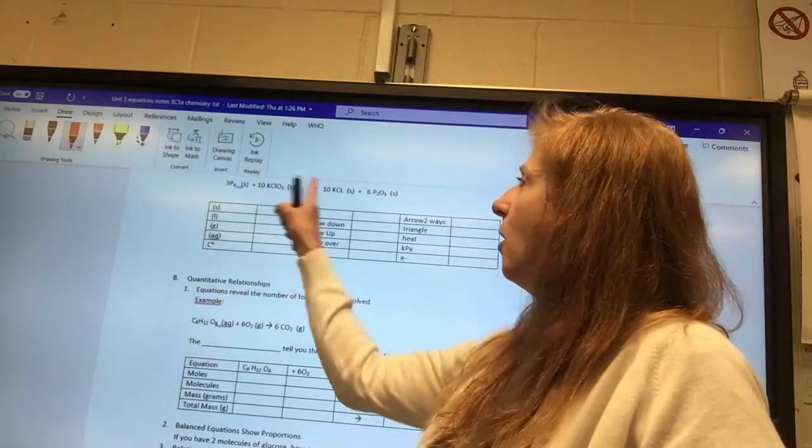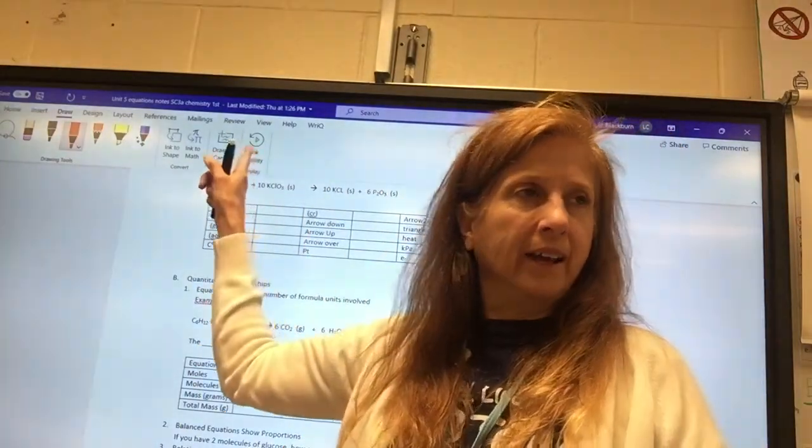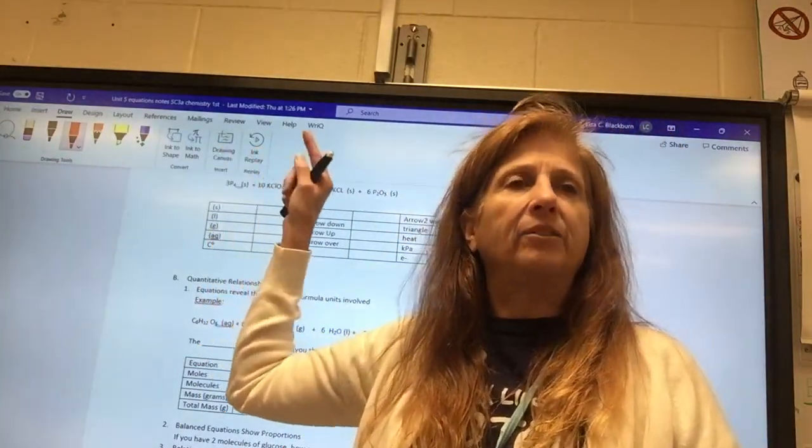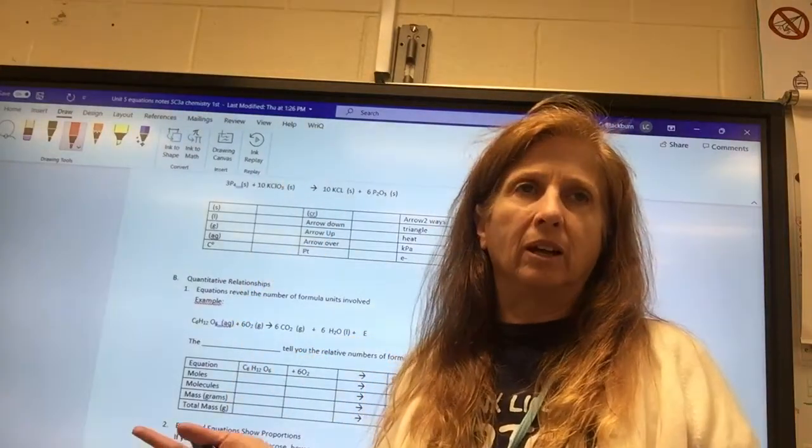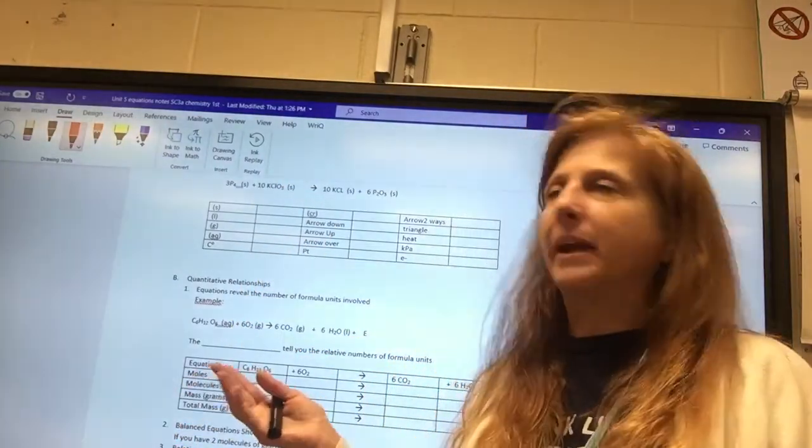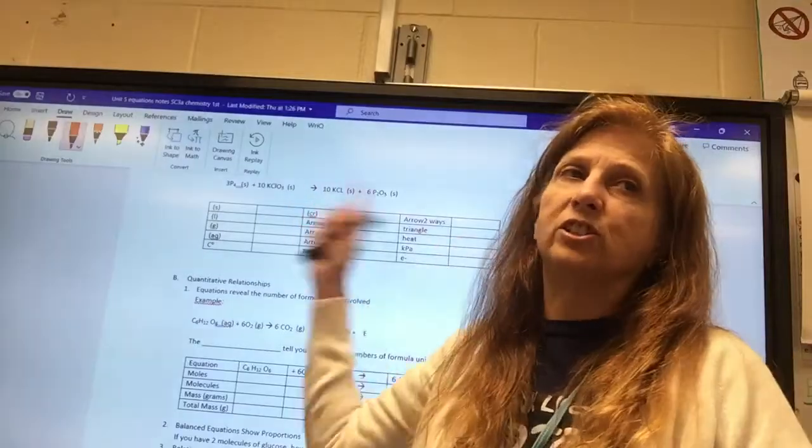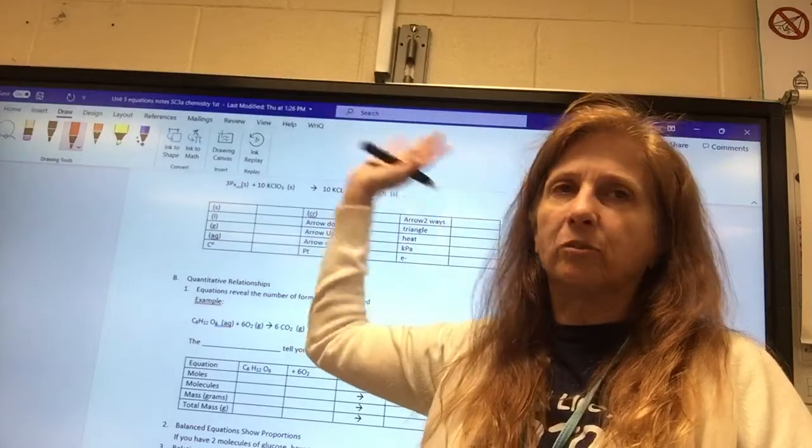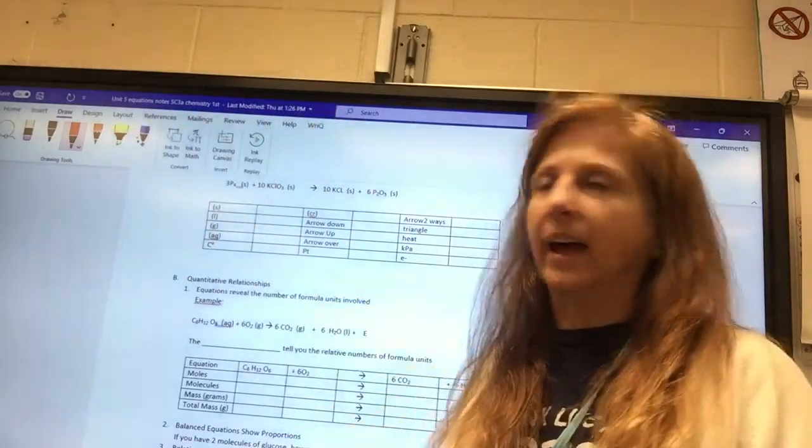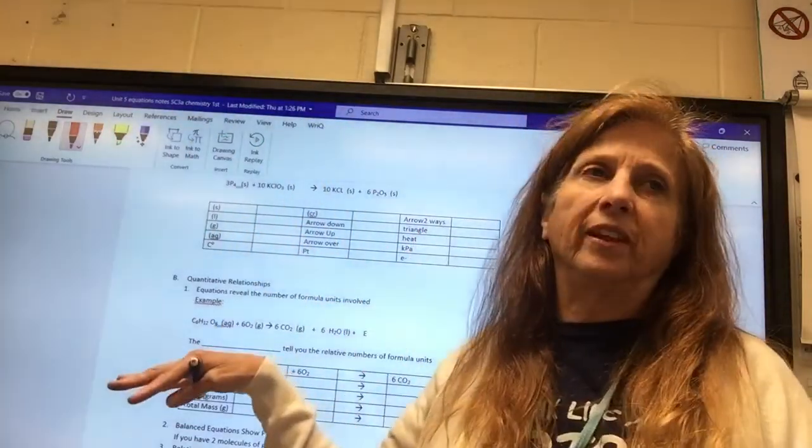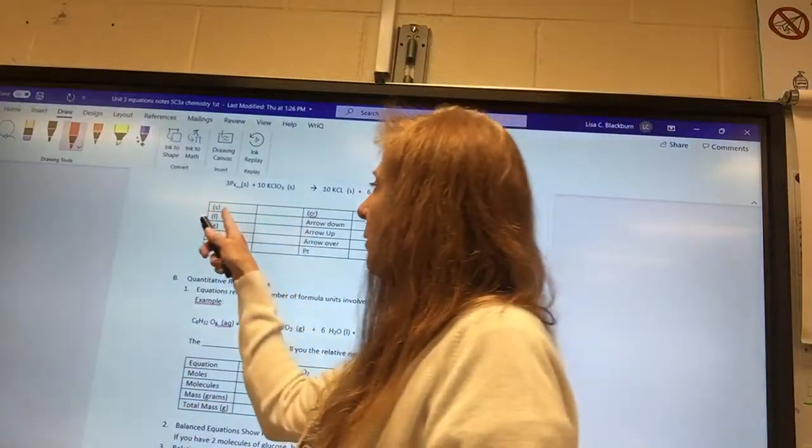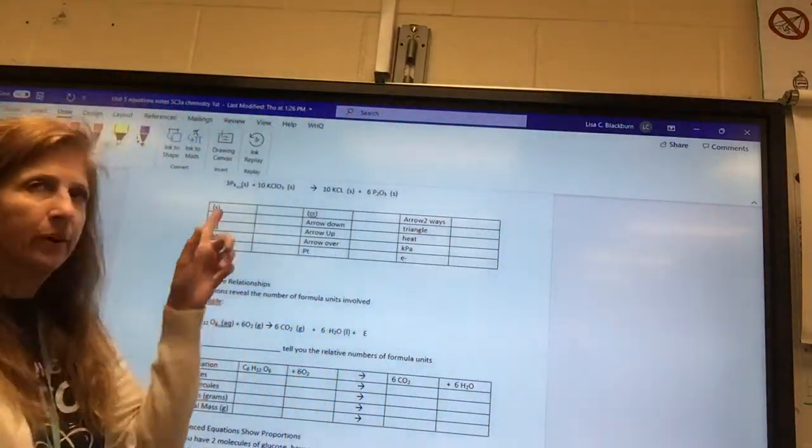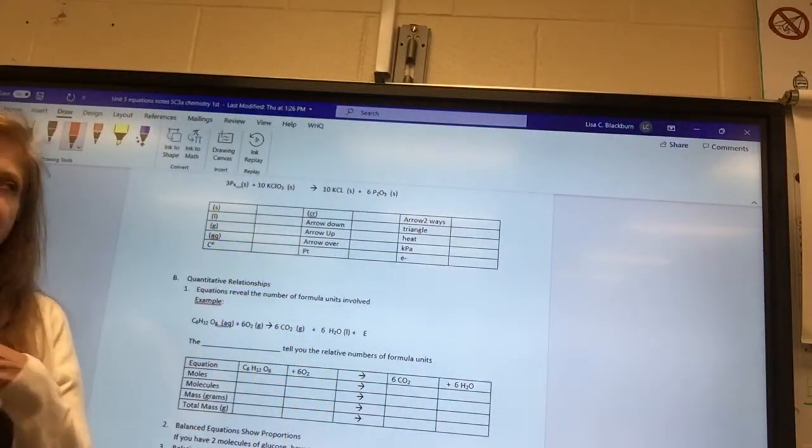Chemical reactions tell you all of that in one line. You don't have to have a little paragraph underneath to tell you how to make it. I know how to do this just by looking at that. This tells me the amounts, everything I need to know. They do that through these symbols. What do you think S in parentheses stands for?